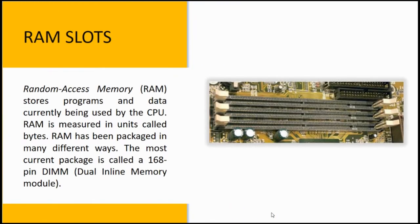The next one is the RAM slots. RAM stands for Random Access Memory. RAM is a kind of computer memory that can be read and written, mainly used to save data and machine code. A RAM device permits data to be read or written in nearly the same amount of time regardless of the data's physical location in memory. Compared to direct access storage devices like hard drives, CD or DVD, and magnetic tapes, RAM is much faster for data reading and writing.